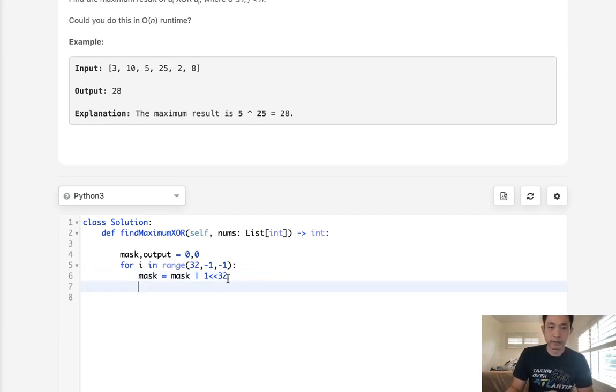All right, so now we have our mask and what we're going to do is create a set of all the numbers that we find. Basically we're going to do an AND operator and find, like if we had 1100, get all the numbers from all these numbers inside here.